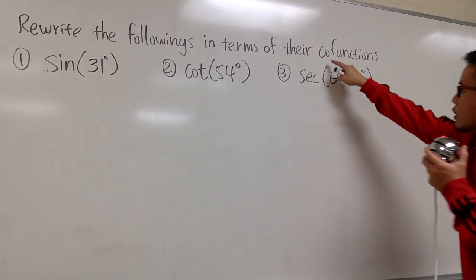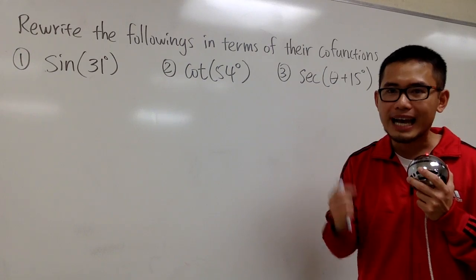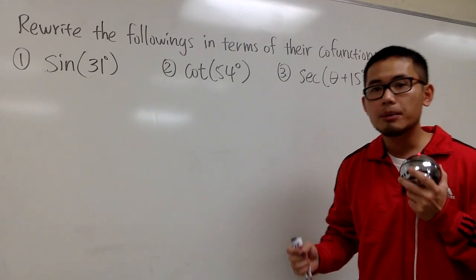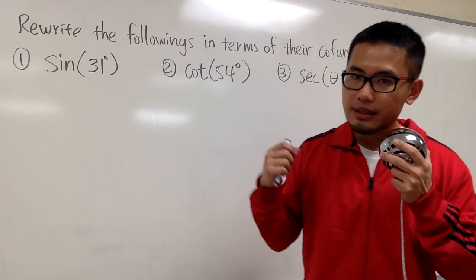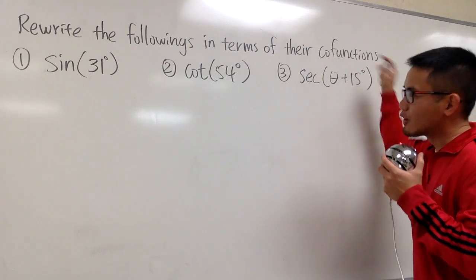And remember, for the co-function, it means that the two angles have to be added to 90 degrees. Because when we have two angles added to be 90 degrees, they are called the complementary angles. That's how we get the name, co-functions.